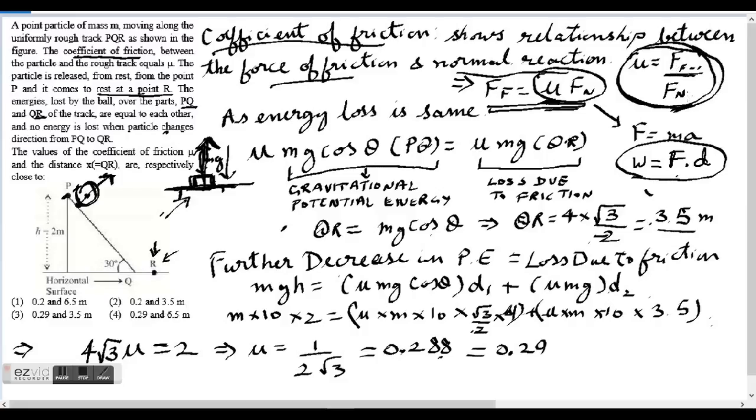Where if you look at this expression, FF is force due to friction and FN is the normal force. So if I send FN here, then force due to friction is equal to mu times FN.